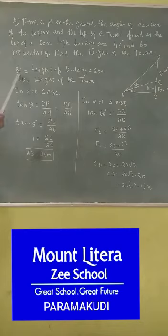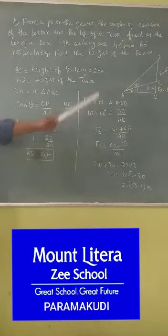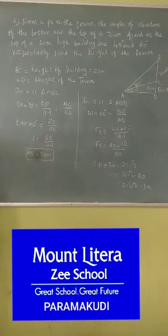So I wrote like this. BC is equal to height of the building. And CD is equal to height of the tower. Students, look at the right triangles. Do you see the two right triangles? Yes. Name them. One is ABC, it is a right triangle. One is ABD, it is another right triangle.